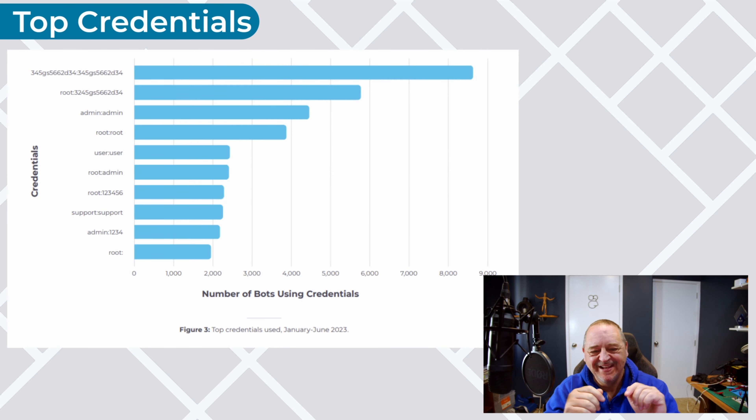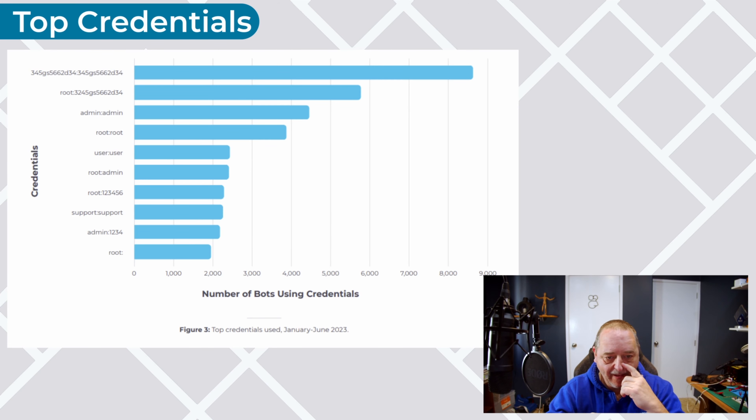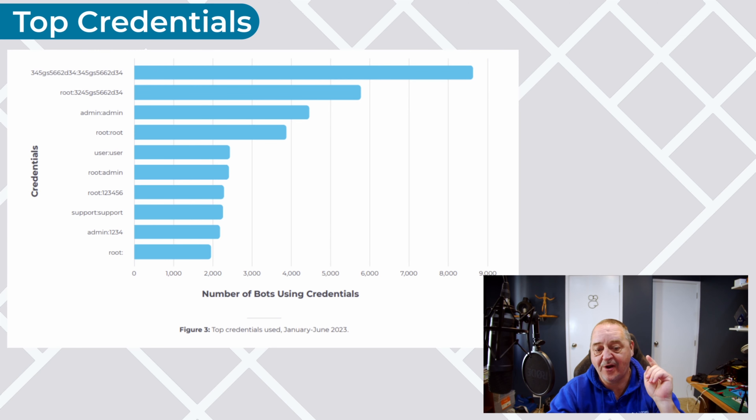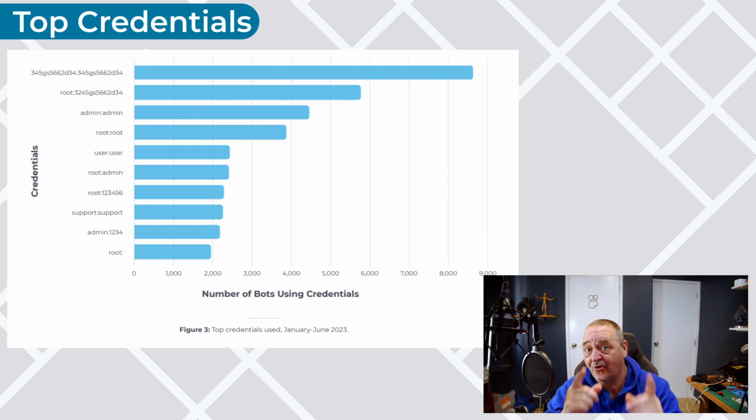Looking at the top credentials, I was a little surprised not to see admin/admin as number one. Except for the top two, none of these are really surprising, but I'll bet there's a good story around why those top two sit where they do — if anyone knows, let me know. I really encourage you to grab a copy of either the full report or the executive summary — better yet, grab both. There's a huge amount of information you can use to make informed decisions and improve your security posture.